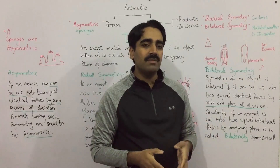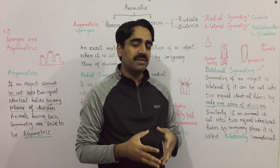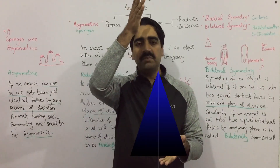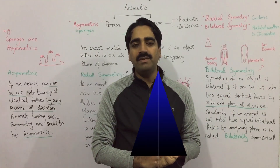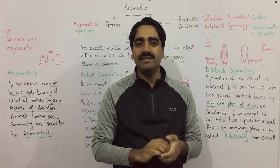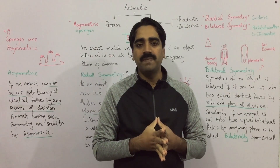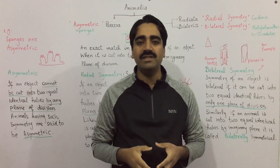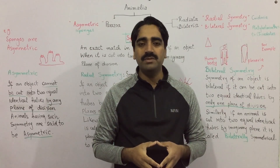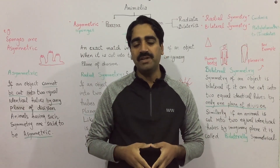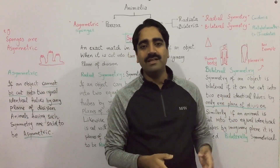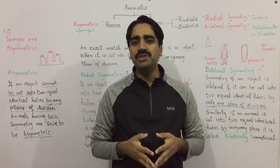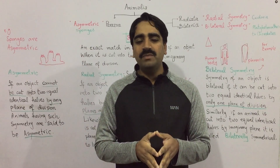Another possibility: consider an isosceles triangle. If we cut the isosceles triangle by the vertical plane, it will be cut only by a single plane and the resulting halves will be identical to each other. In case of a circular or spherical shape, it can be cut into two identical halves by more than one plane of division, whereas a triangle or a raindrop can be cut by only a single plane of division.